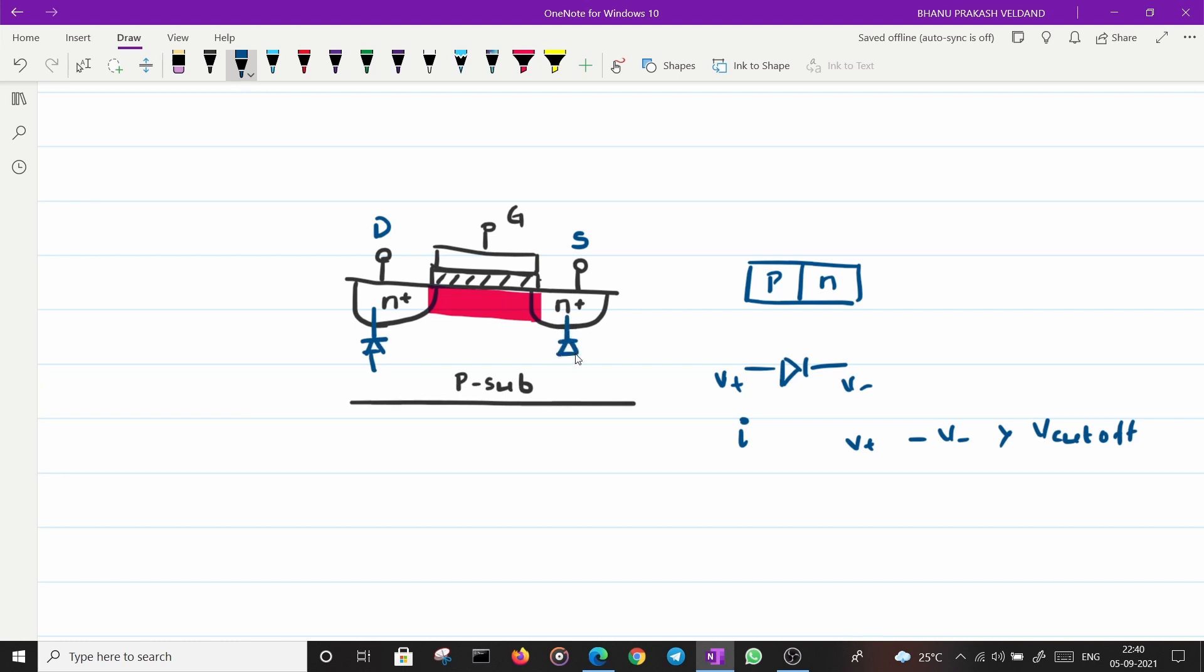So to avoid the current in the PN junction here, what people do is they connect this terminal to the most negative voltage available. Or they connect the P substrate to the most negative voltage that is available in your design. Suppose if you are operating between 3 volts and 0 volts, you will connect this to 0 volts. The P substrate is connected to 0 volts. In the IC manufacture this connection is made through another P plus region. You will have another P plus region here and you will connect this to the most negative terminal. This is called as bulk.